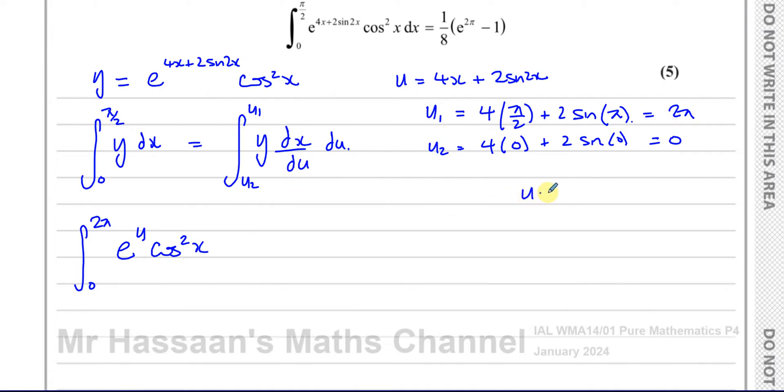I need to find what dx du is. We know u is equal to 4x plus 2 times sine of 2x. I can find du dx very easily. The differential of 4x is 4. If you differentiate 2 sine 2x you're going to get 2 cosine 2x, but then you have to multiply by 2 because of the chain rule, so you end up with plus 4 cosine of 2x. That's going to be the same as 4 times 1 plus cosine of 2x. That's du dx. That means dx du is 1 over 4 times 1 plus cosine of 2x.